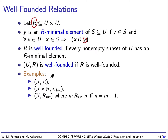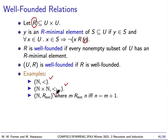We have some examples here. We've seen natural numbers with less-than — that is also a well-order. And we've seen pairs of natural numbers in lexicographical order — that's also a well-order. But here is a structure that's well-founded but not a well-order: the natural numbers with the successor relation, which says that M is related to N if N is the successor of M.